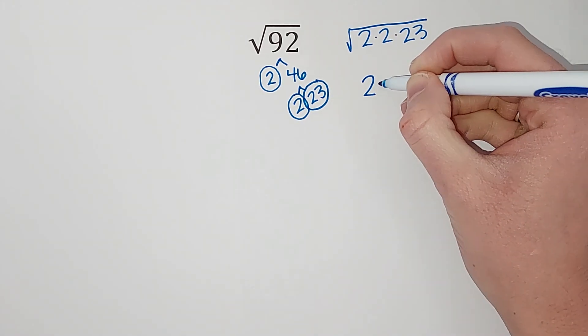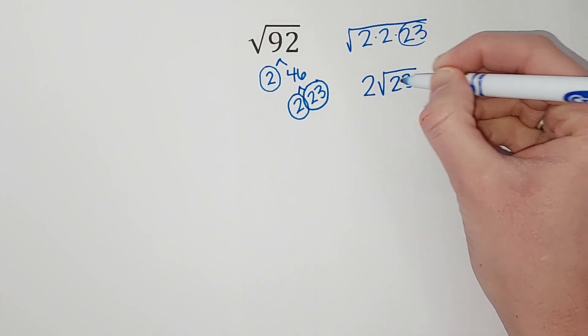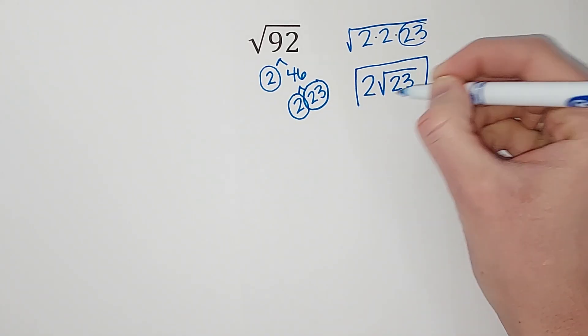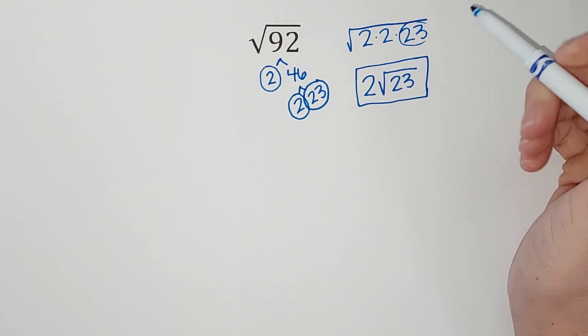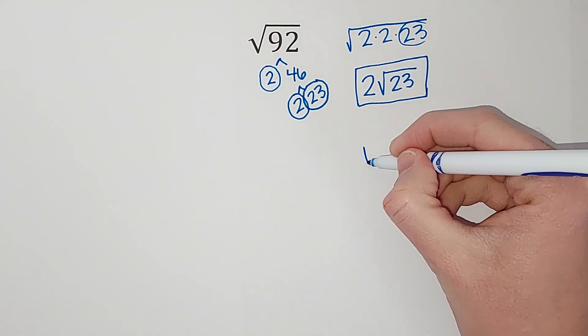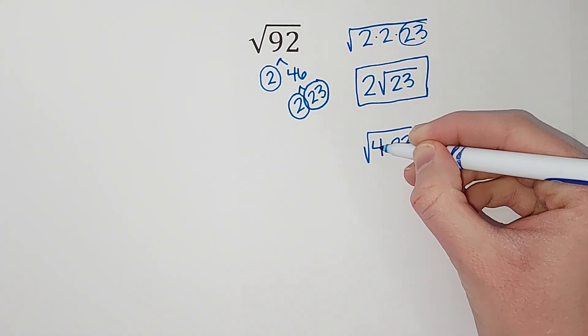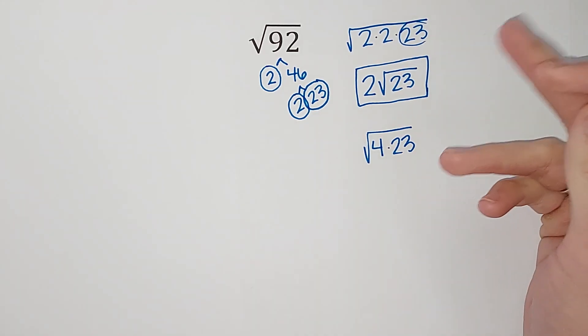Now if you're like, why did you just write one two on the outside? Well, think about this for a second: 2 times 2 is 4, right? So I could have written this as 4 times 23, and the square root of 4 is 2. Same thing, just a different way to look at it.